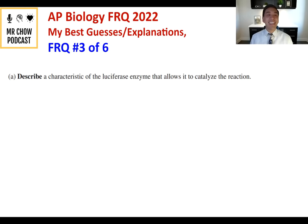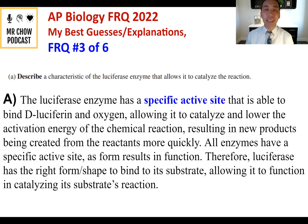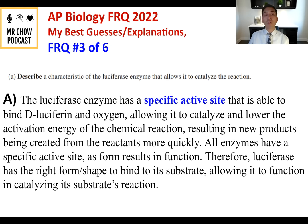Question 3A: Describe a characteristic of luciferase that allows it to catalyze the reaction. The luciferase enzyme has a specific active site that is able to bind D-luciferin and oxygen, allowing it to lower the activation energy of the chemical reaction, resulting in new products being created more quickly. All enzymes have a specific active site — form results in function — so luciferase has the right shape to bind its substrate and catalyze the reaction.